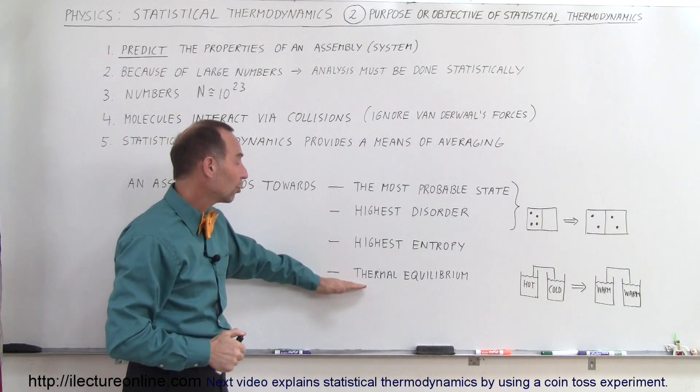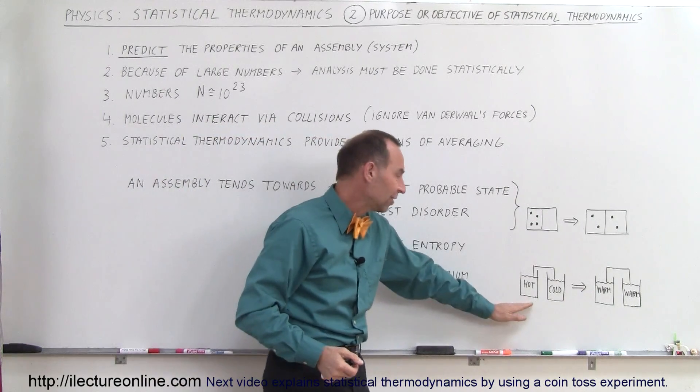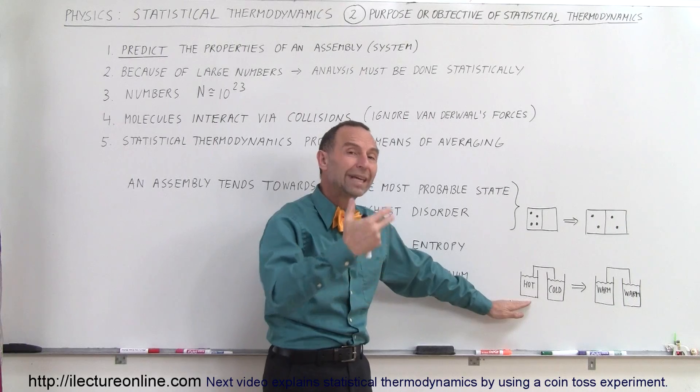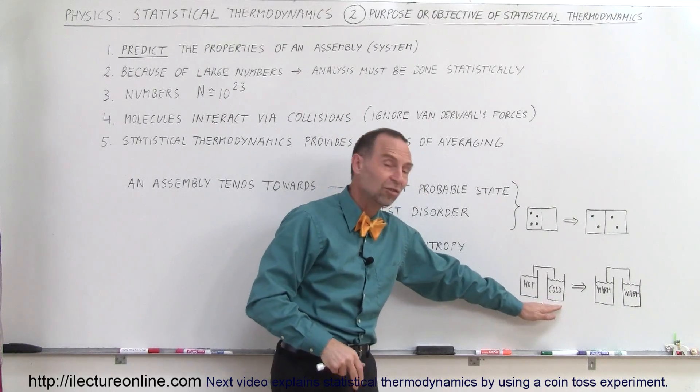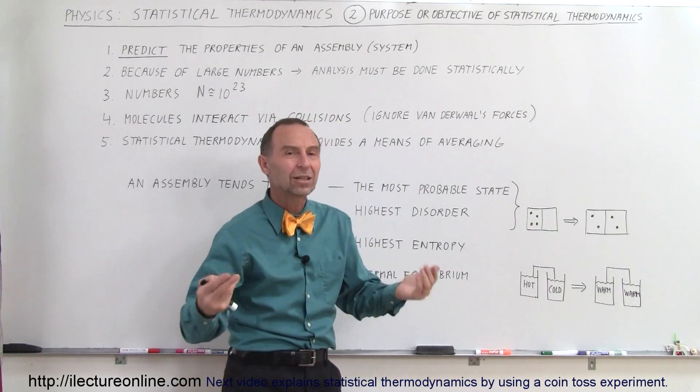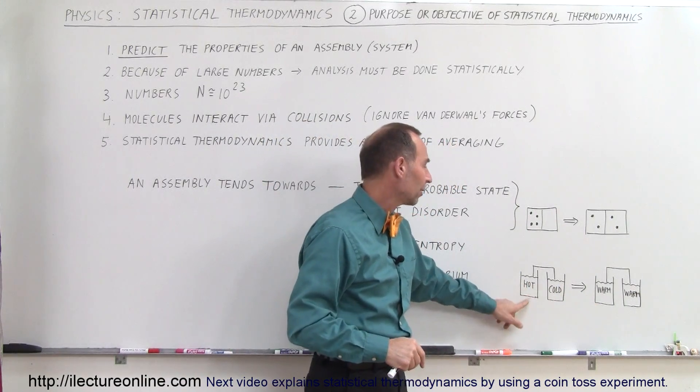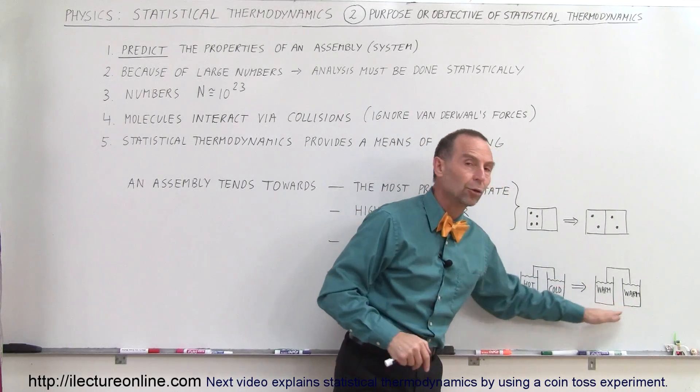Or you can say they tend towards thermal equilibrium. Let's say we have two states where we have one state where it's hotter, more heat is contained in that state, and this one is colder. And if we can somehow connect the two, so that heat can be exchanged between the two, we can then see that heat from the hot will go to the cold until they're both at the thermal equilibrium.